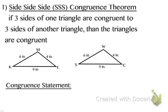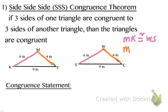I can see that on my triangle on the left, side MK is six inches long. The corresponding side from the other triangle is side WS, which is also six inches long. So side MK is congruent to side WS. Next, side ME on my first triangle is congruent to side WC on the other triangle — they are both four inches long. So side ME is congruent to side WC.